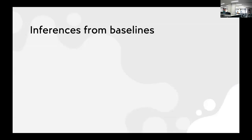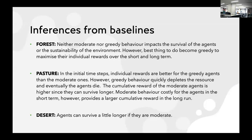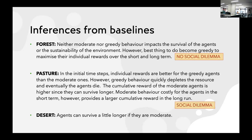The key inferences are: in forest, neither moderate nor greedy behavior impacts sustainability, so agents can maximize rewards freely. In pasture, moderate behavior is helpful and the cumulative reward of moderate agents is higher since they survive longer. In desert, moderate agents survive a little longer but greedy agents deplete energy very quickly. Forest is a no-social-dilemma situation; desert is a no-win situation. Pasture is the true social dilemma — there is a trade-off between individual rewards and cumulative long-term outcomes.